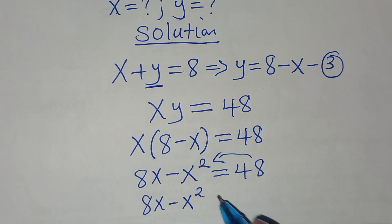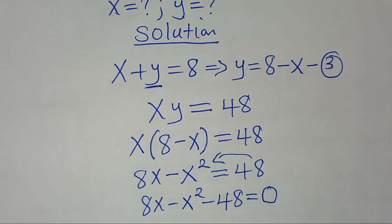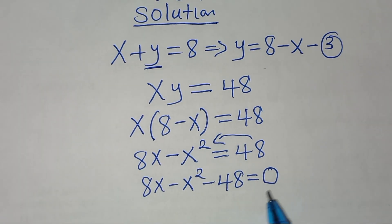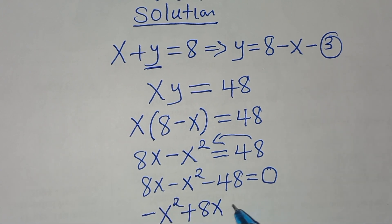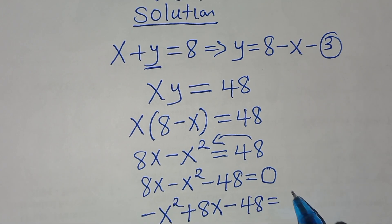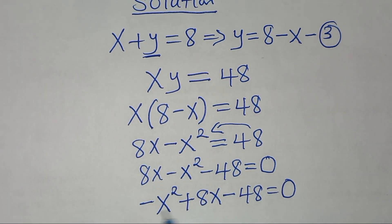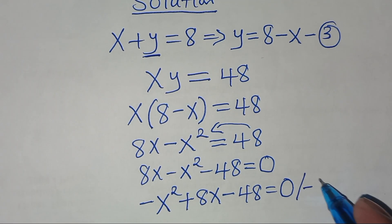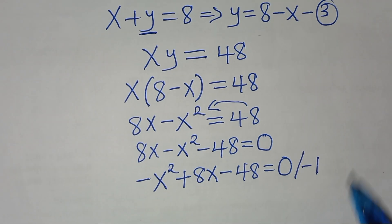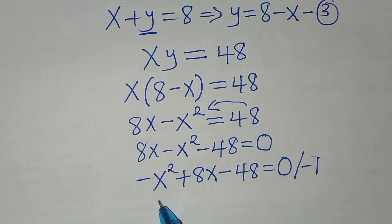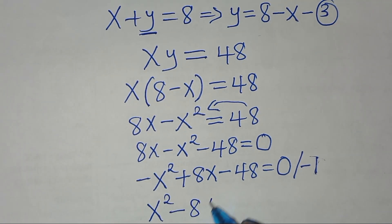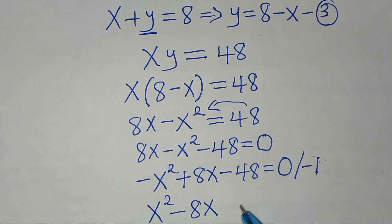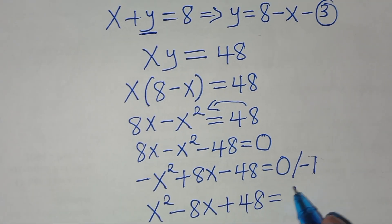Taking 48 to the left-hand side gives 8x minus x squared minus 48 equals 0. Rearranging, we have minus x squared plus 8x minus 48 equals 0. Multiplying both sides by minus 1 gives x squared minus 8x plus 48 equals 0.